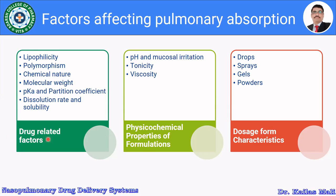In the case of drug-related factors, we are going to discuss lipophilicity, polymorphism, chemical nature, molecular weight, pKa and partition coefficient, dissolution rate, and solubility. In the case of physico-chemical properties of the formulation, we will discuss pH and mucosal irritation, tonicity, and viscosity. For dosage form characteristics, we will discuss drops, gels, and powders.